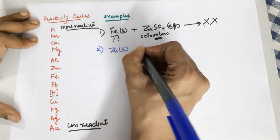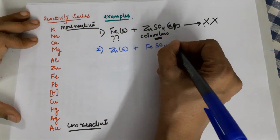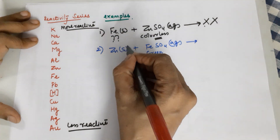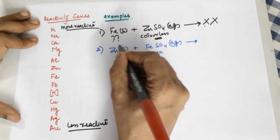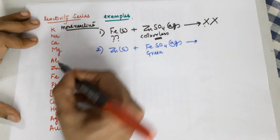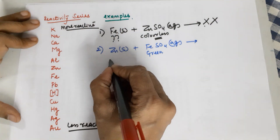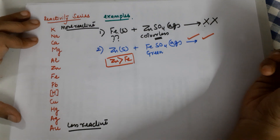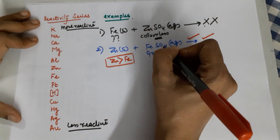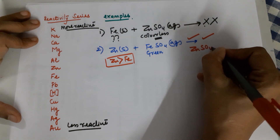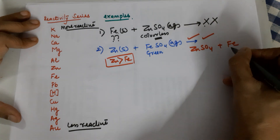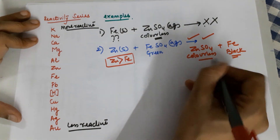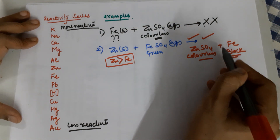Coming to example 2: what happens if I take a zinc piece and add it to ferrous sulfate aqueous solution, which is a green colored solution? Check whether this metal is more reactive — zinc is above iron in the reactivity series, so zinc is more reactive than iron, and the reaction would happen. Iron would be replaced from sulfate, forming zinc sulfate, and iron would move out. Iron is black in color, zinc sulfate is colorless, so the solution changes from green to colorless and you would see black colored iron deposited over zinc.